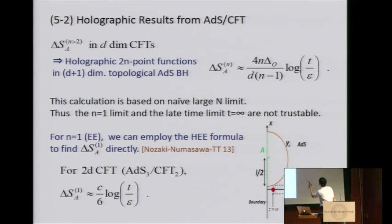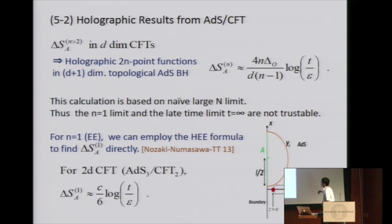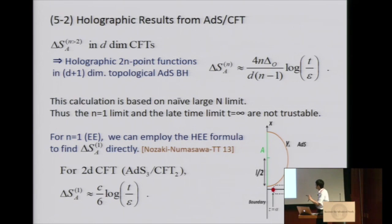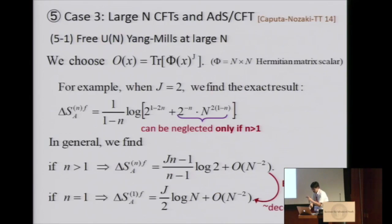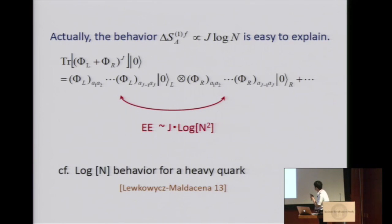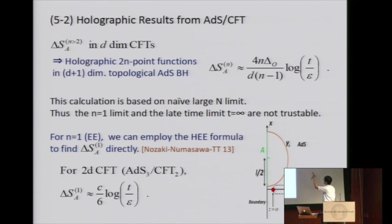This logarithmic growth is proportional to the conformal dimension, and it is true for Rényi entropy. If we take n goes to 1, the von Neumann entropy limit, this geodesic approximation breaks down because it diverges. But if we don't take this limit, we have a formula proportional to the conformal dimension of the excited operator. For the n=1 von Neumann entropy, we use the holographic entanglement entropy formula instead, and we get delta S with n=1 equal to C times log t — much like the local quench result, with a slightly different coefficient. So the degree of freedom appears for von Neumann entropy in holographic calculations, where the conformal dimension appears.